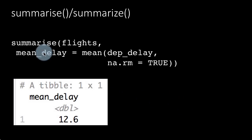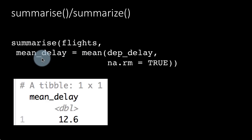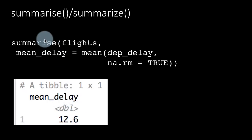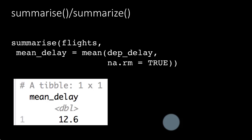Now what you have to note is that dplyr functions — all of them — return tibbles. So for example, if you do a filter, you get back a tibble; select, arrange, mutate, transmute — all of those functions give back tibbles, and the summarize function too gives back a tibble. In this particular example, all we are doing is computing one single number, mean_delay, which is the mean of all the departure delays. So the result is actually just a single number, but still summarize returns the result in the form of a tibble — one row and one column. The column is named mean_delay, and 12.6 minutes happens to be the mean of all the departure delays in the entire data set.